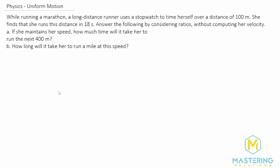Welcome to Mastering Solutions. In this problem, they want us to use ratios to figure out these two questions. They say if she maintains her speed — 100 meters in 18 seconds — how long will it take her to run 400 meters? And then how long will it take her to run a mile?